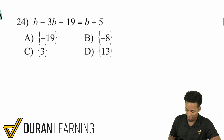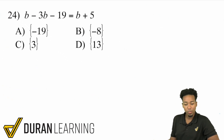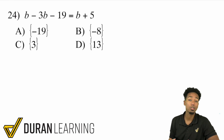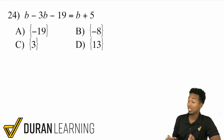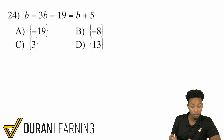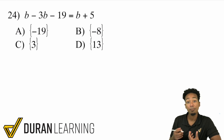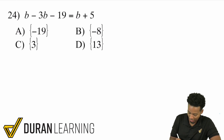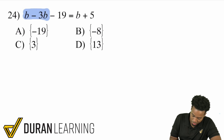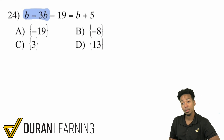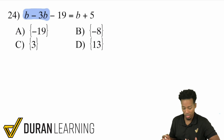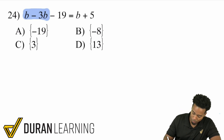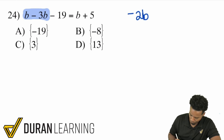Let's keep going. A couple more practice problems — we got this. So here's number 24. We have variables on both sides, and we also have two variables on the same side. So what we can do first is go ahead and combine like terms. What is b minus 3b? It's basically saying what's 1 minus 3, because they're like terms. And so 1 minus 3 is negative 2 — negative 2b.